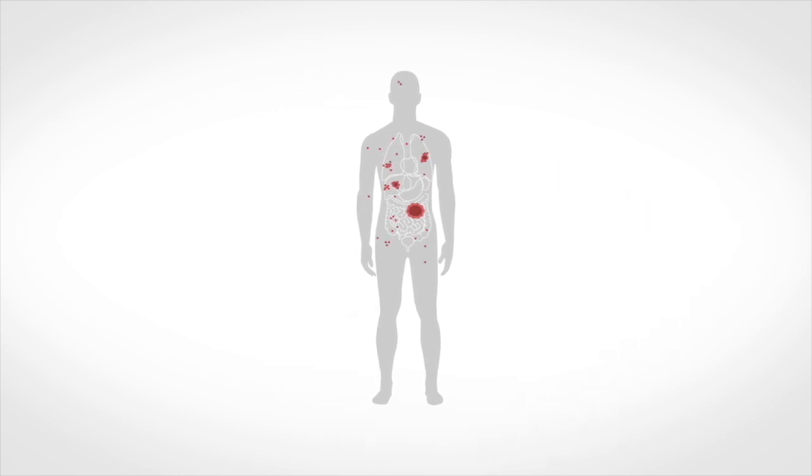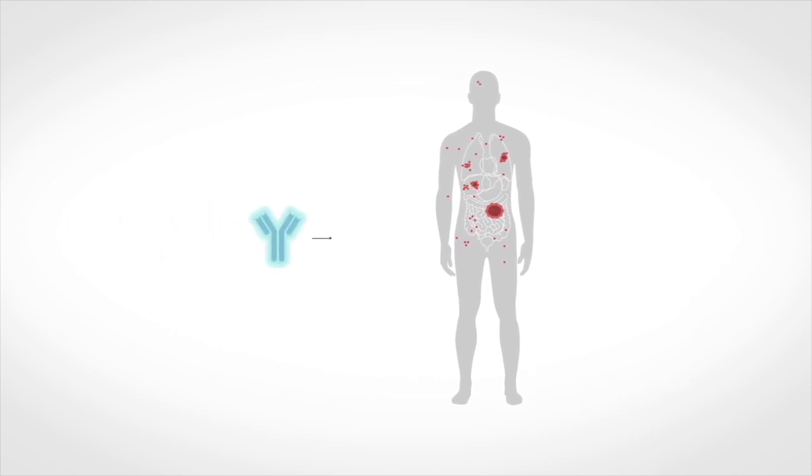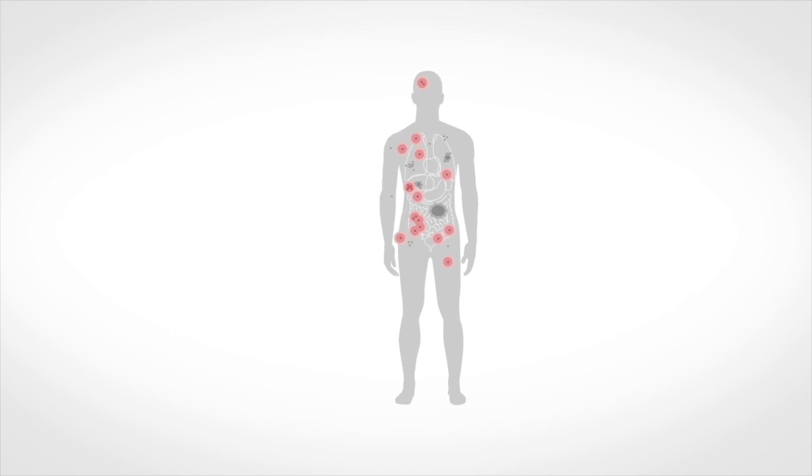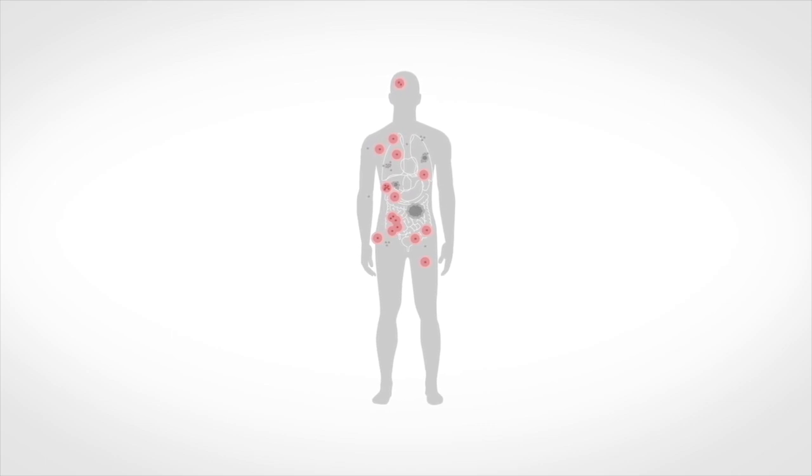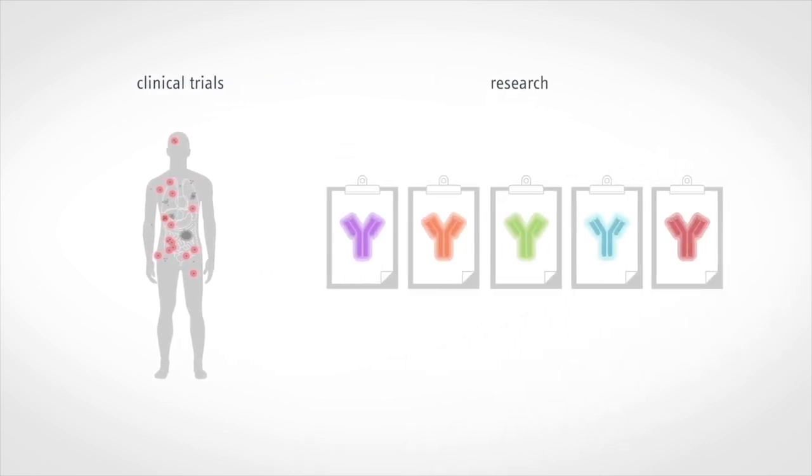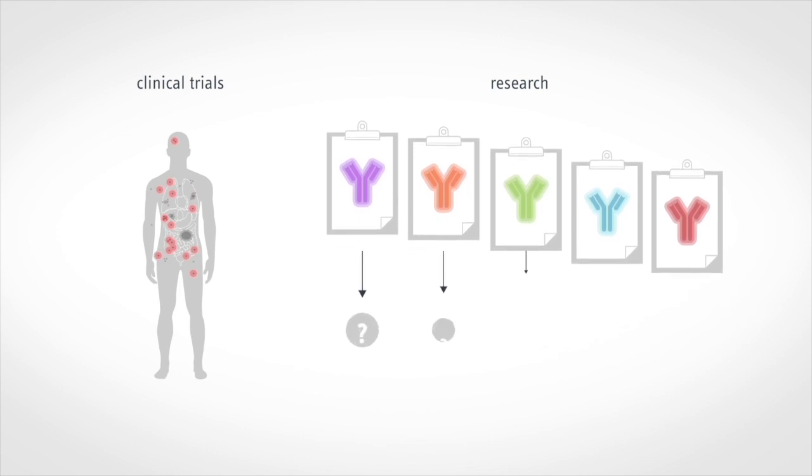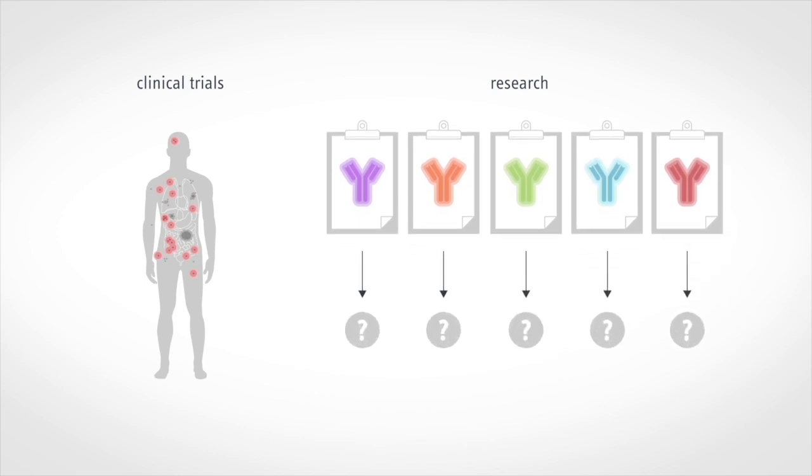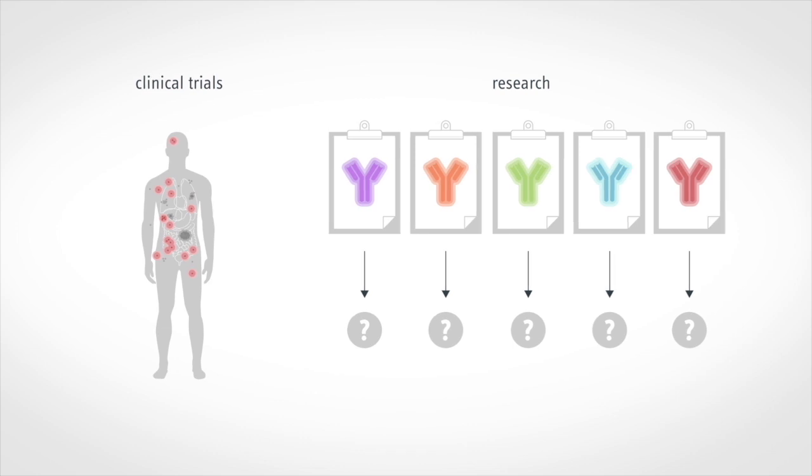Treating metastatic cancer successfully requires that anti-tumor drugs can reach and eliminate multiple metastases throughout the body. Unfortunately, this is often not the case. This shortcoming of cancer drugs is often discovered only during clinical trials because researchers have so far lacked methods to visualize the tumor-targeting ability of drugs with sufficient sensitivity and resolution to identify the most promising candidates during preclinical development.